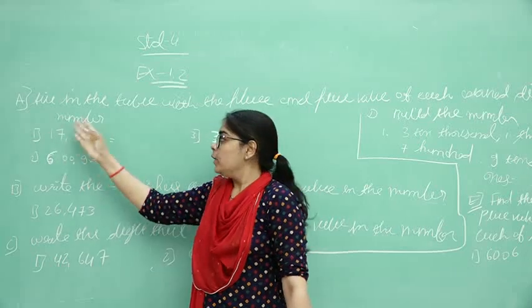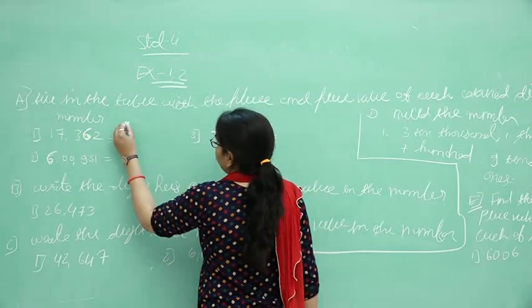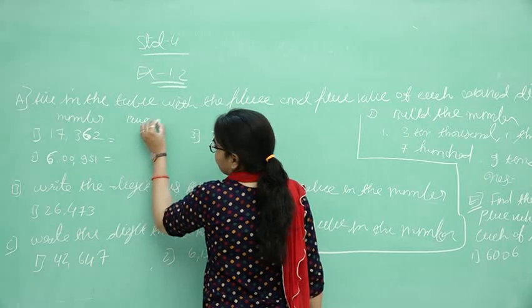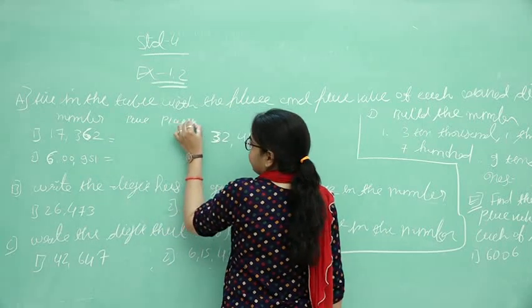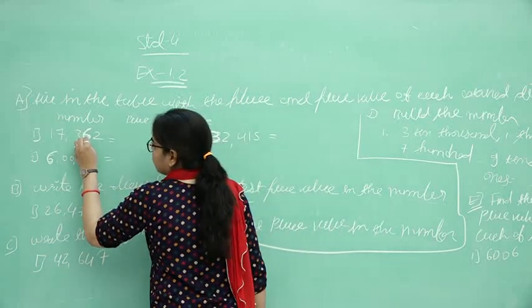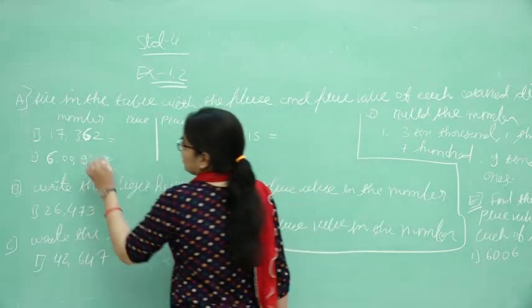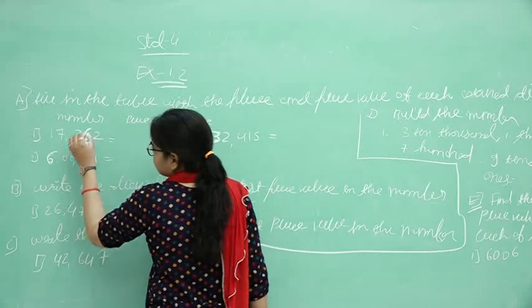The number is already given and we have to find place and place value. Here, colored digit is 6. What is the place of 6? It's 10.